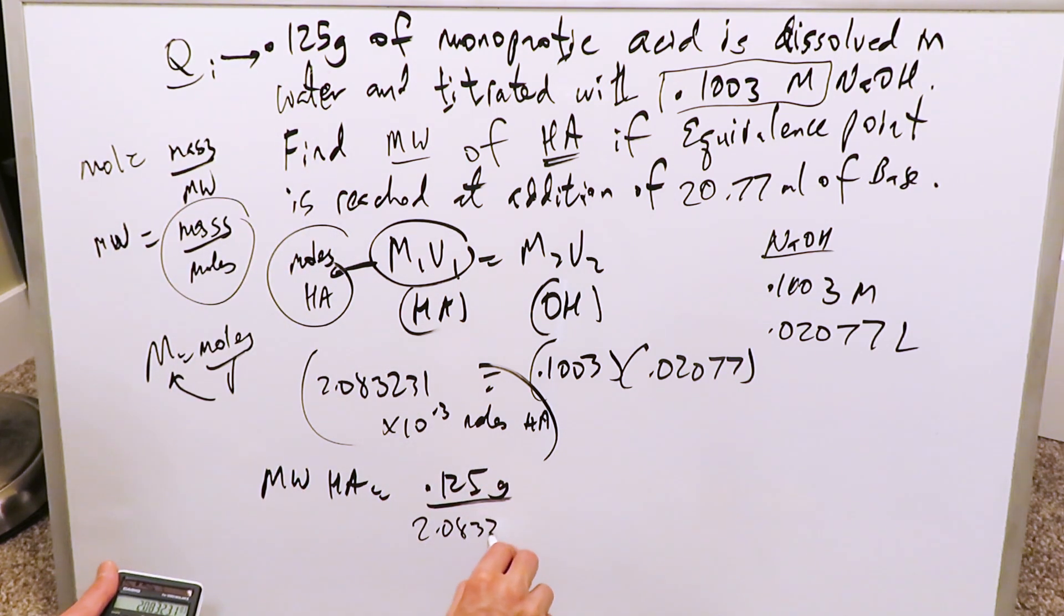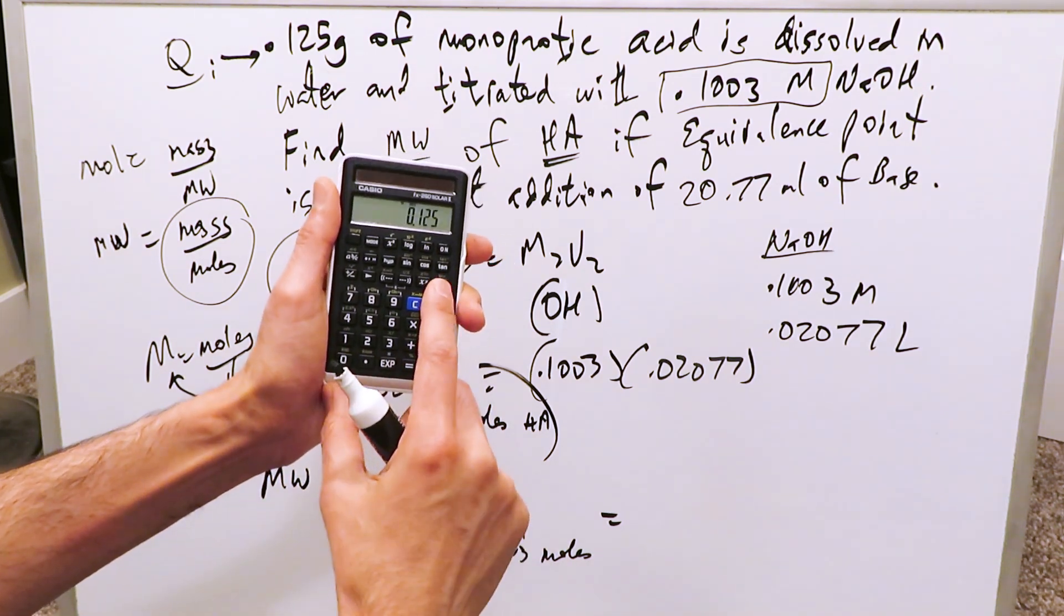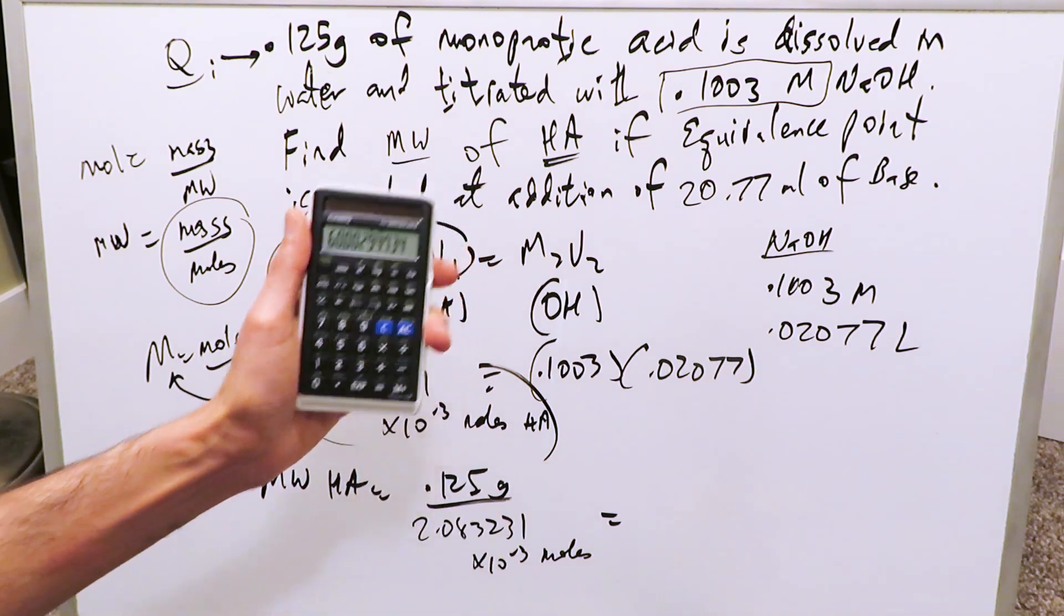2.083231 times 10 to the minus 3 moles of acid. And the units of molar weight or molecular weight is always grams per mole. I'll do 0.125 divided by that saved value of the moles, and I'll get here 60.